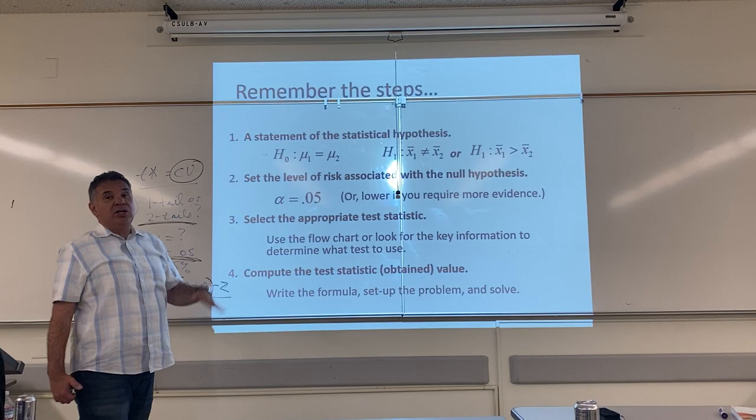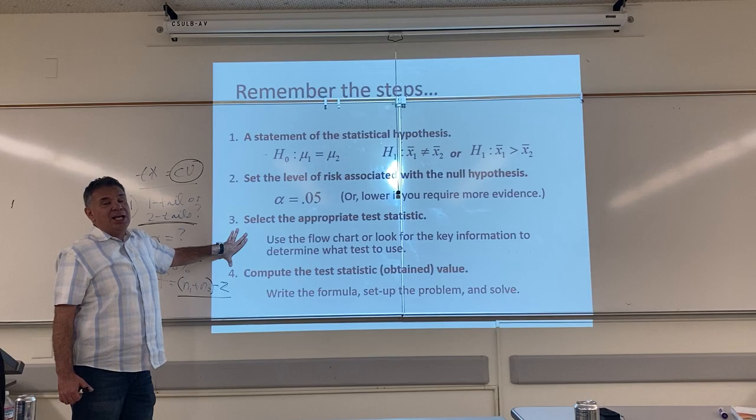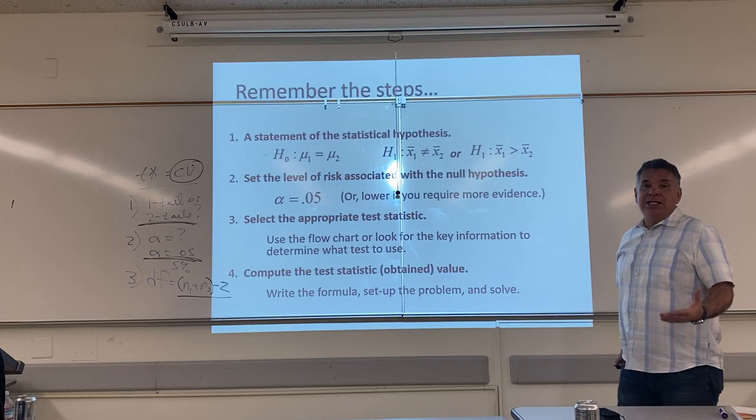Step two: set the level of risk associated with the null hypothesis. In other words, what is alpha? We're going to use five percent until further notice. We can make it lower if we want to make the test harder. You make your alpha smaller, making the test harder — that's when you require more evidence.